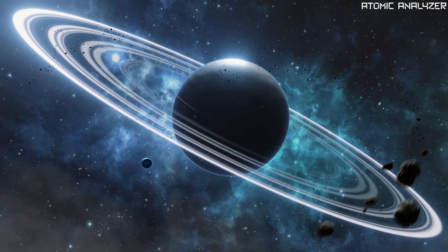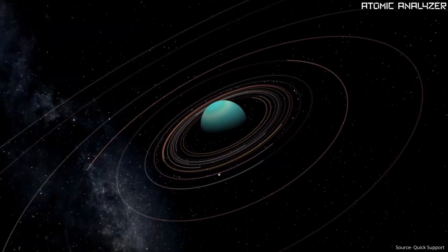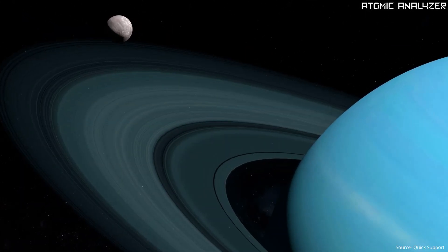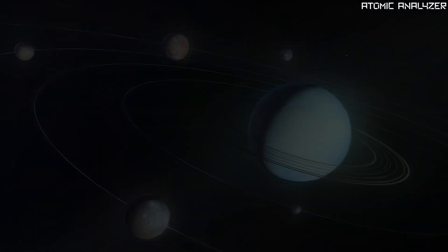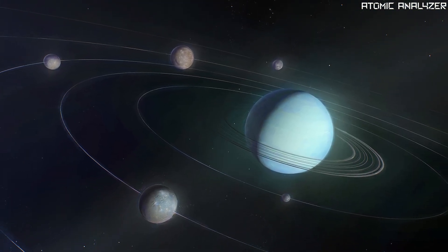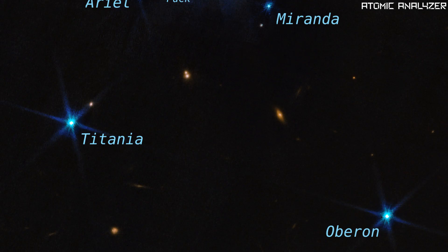Uranus also has rings and moons just like Saturn. It has 13 known rings and 27 moons. The rings are quite faint, so you will need a powerful telescope to see them. And some of its moons have really interesting names like Titania and Oberon.